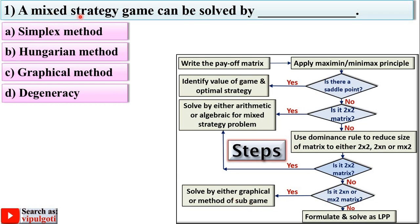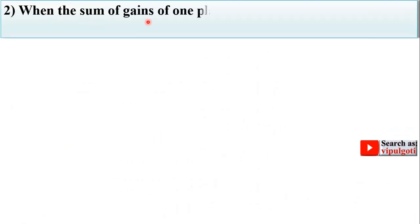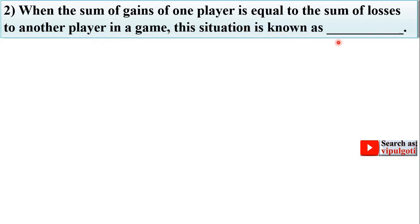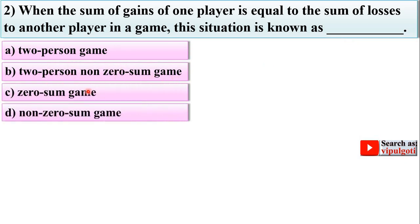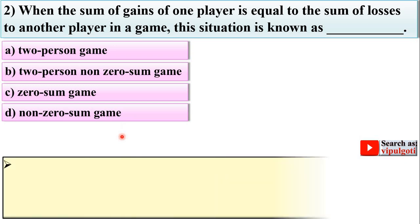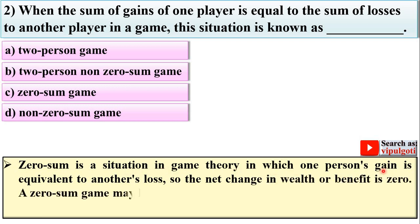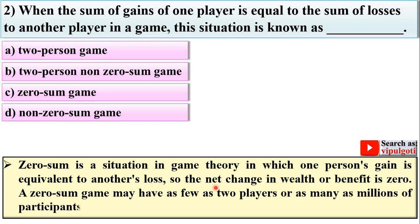For a mixed strategy game, the graphical method is used. Next question: when the sum of gains of one player is equal to the sum of losses to another player, this situation is known as — options: two person game, two person non-zero sum game, zero sum game, or non-zero sum game. The important note: zero sum is a situation in game theory where one person's gain is equivalent to another's loss, so the net change in wealth or profit is zero. A zero sum game may have as few as two players or millions of participants. When the sum of gains equals the sum of losses, it is called a zero sum game.